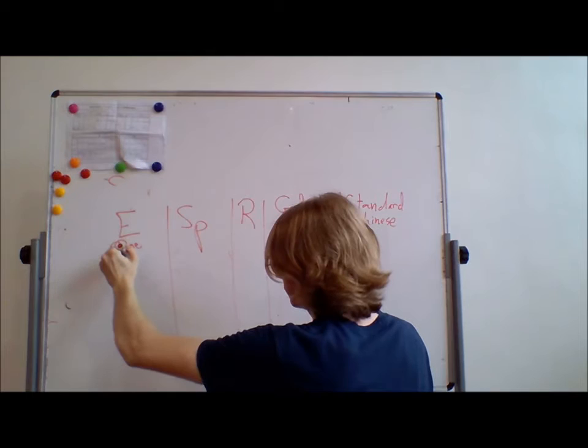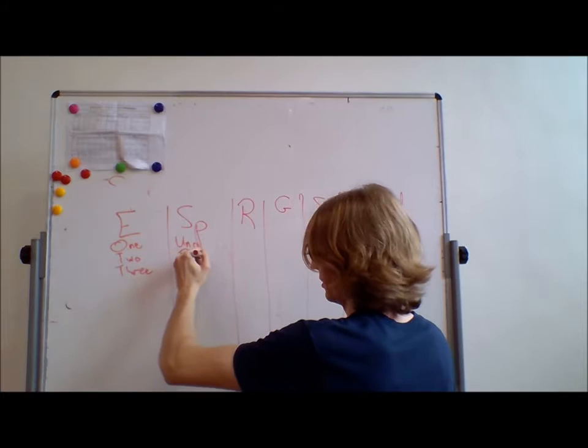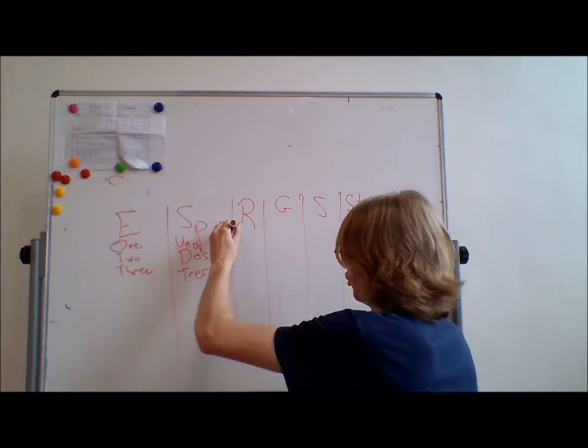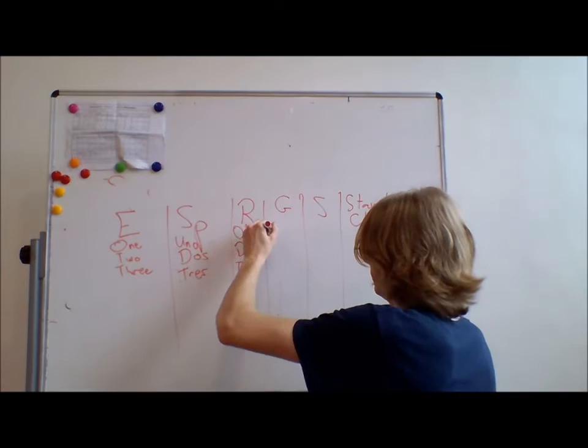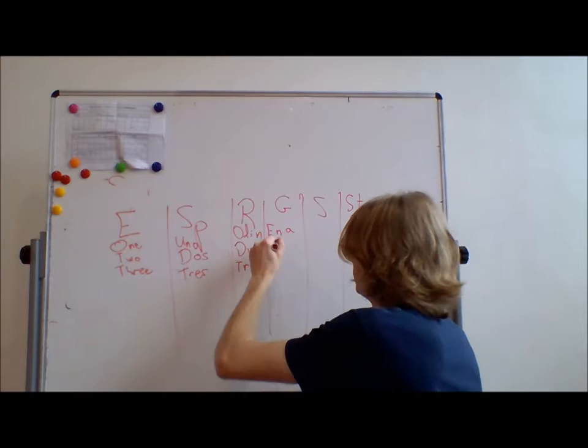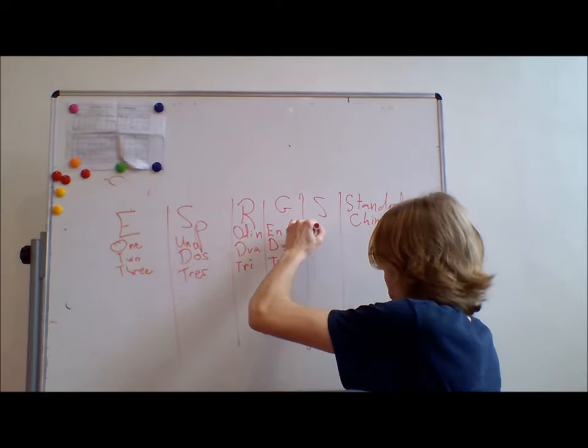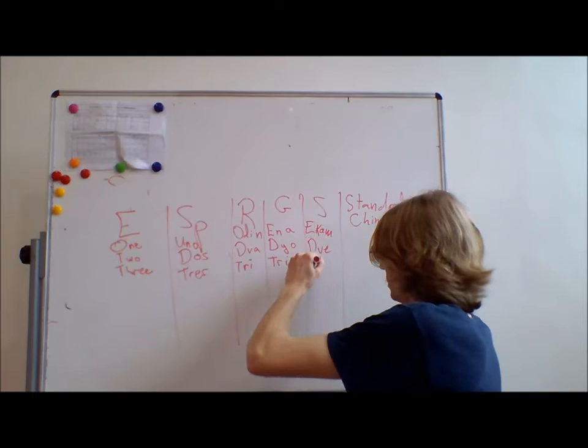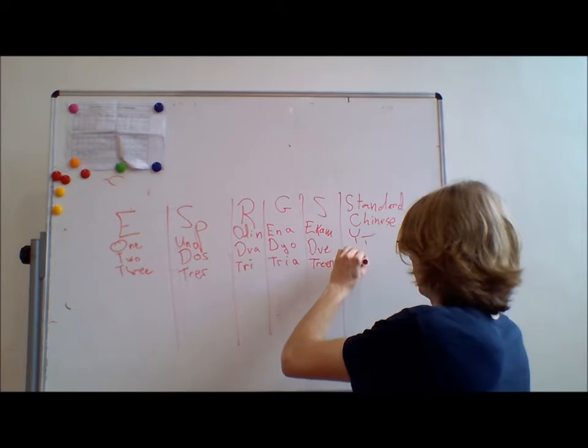So, in English we have one, two, three. Spanish, uno, dos, tres. Russian, odin, dva, tri. And in Greek we have ena, dyo, tria. Sanskrit, we have ekan, dve, treini.